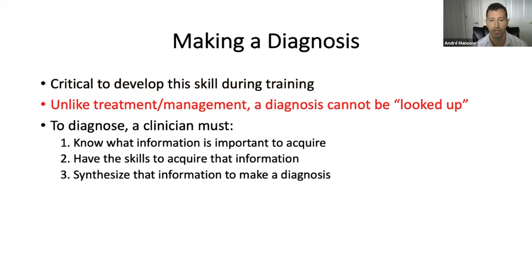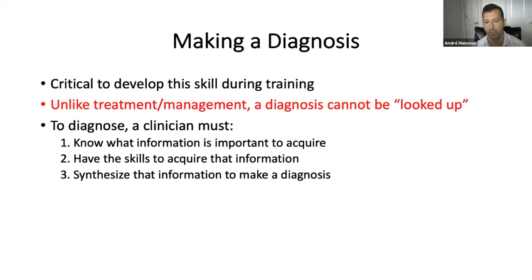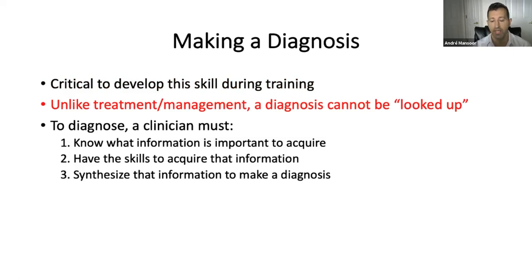I think we spend far too much time on treatment and management. I see students memorizing treatment and management and not enough time talking about the diagnostic process. Once a diagnosis has been made, that's the hard part. Making the diagnosis of acute pericarditis — that's the hard part. From there you can look up the treatment, whether it's an NSAID or colchicine. To make a diagnosis, a clinician has to do three things.